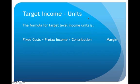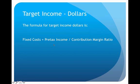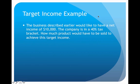To find the sales needed to hit a target income in units, the formula is: fixed costs plus pre-tax income, divided by contribution margin. To get the answer in dollars, use: fixed costs plus pre-tax income, divided by contribution margin ratio. Note that pre-tax income requires a calculation — you must earn more pre-tax than the desired after-tax income, so a manipulation is needed.